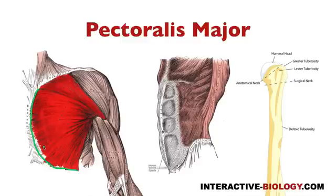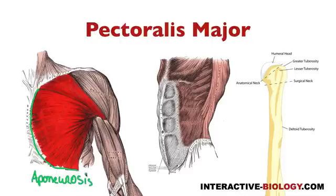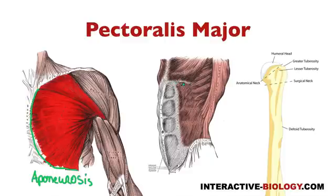The upper six costal cartilages are part of the origin, and then the inferior section of the sternocostal portion is also attached to the aponeurosis of the external oblique muscles. The external oblique muscle is one of the abdominal muscles, and the aponeurosis is this flat tendon-like structure — a flat, kind of tendon — and that's where we find the final part of the origin of the sternocostal portion.